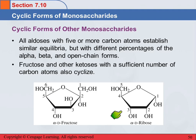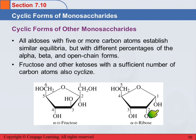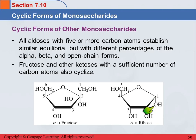Ribose is a five-membered aldose — an aldopentose. Carbon one is the anomeric carbon. When we draw these rings, the oxygen is always towards the back, and the anomeric carbon is the one just to the right of the oxygen. Here this is down — that's the alpha. There's the oxygen, and this is the anomeric carbon. This one's not the anomeric carbon because it's not part of the ring — we look at the hydroxyl group: it's down, so that's alpha.